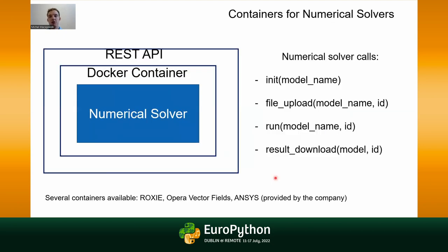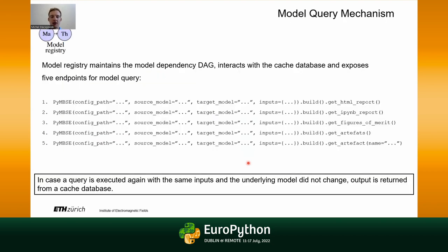Starting with containers for numerical solvers: we have a solver solving a particular physical problem — magnetic, mechanical, or thermal — encapsulated in a Docker container with all its dependencies and running environment. We then provide a generic REST API to interface with that solver, with four methods: initialize, upload files, run those files, and download results. We have already created some containers, and some are provided by other companies.